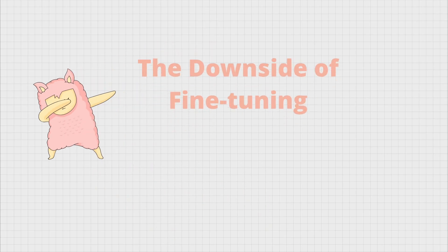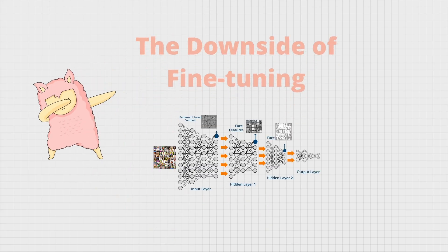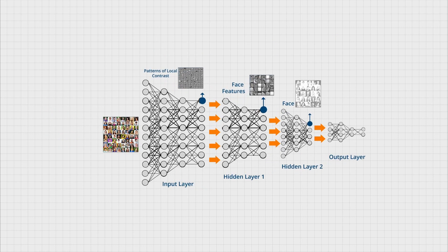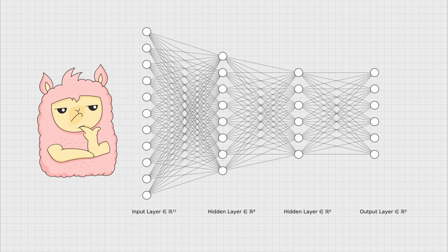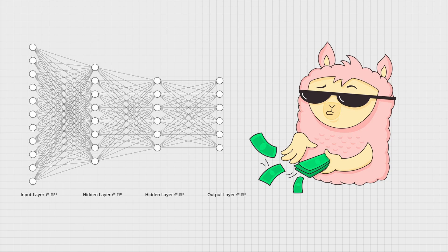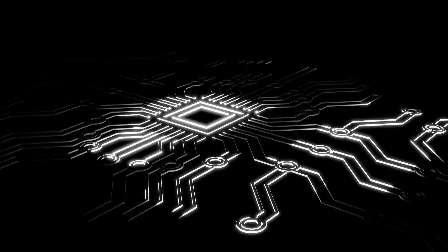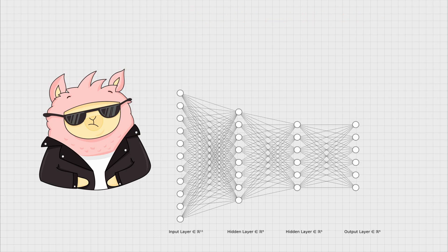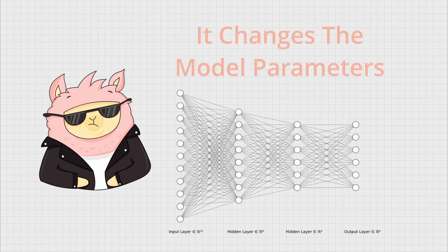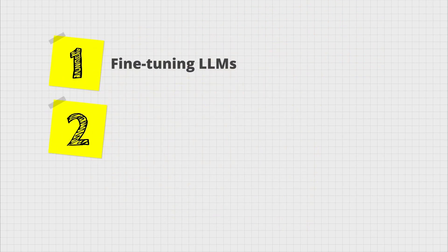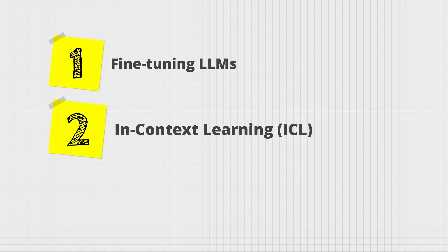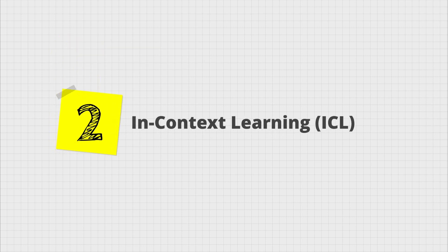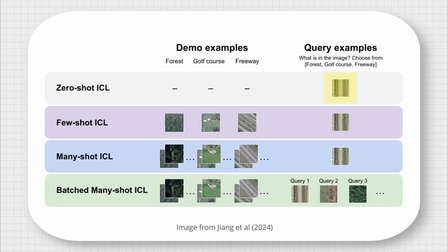The downside of this approach is that it goes through a similar process as the initial model training. It requires high computation power and it changes the model parameters. A less demanding method is in-context learning, or ICL.